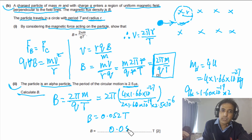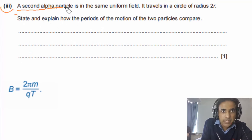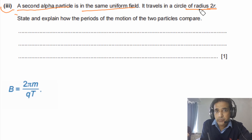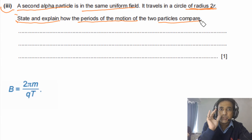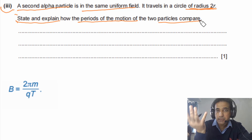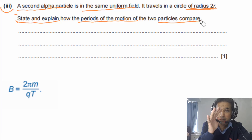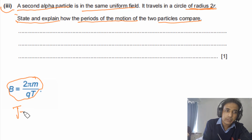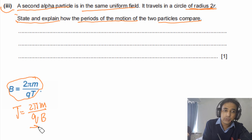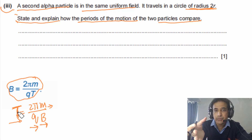Part (b)(iii): a second alpha particle is in the same uniform field and travels in a circle of radius 2r. We need to state and explain how the periods of the two particles compare. Both are alpha particles in the same field, so mass, charge, and B are all identical. Looking at T = 2πm/(qB), since q, m, and B are all the same, the time period for both particles is the same.